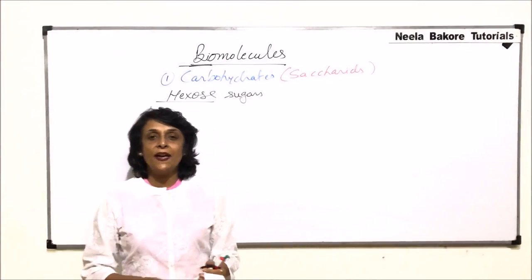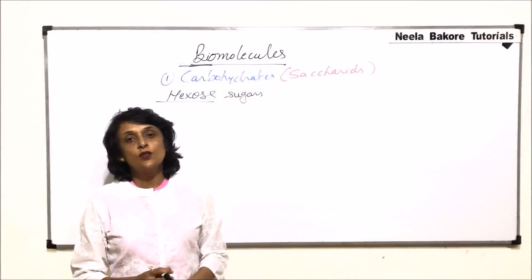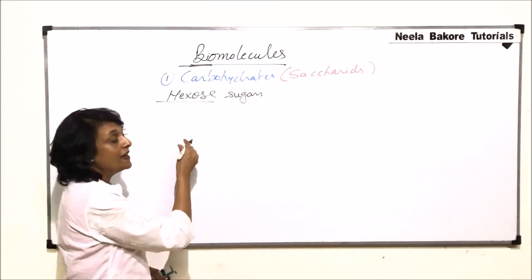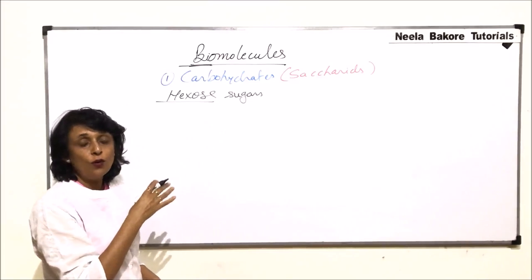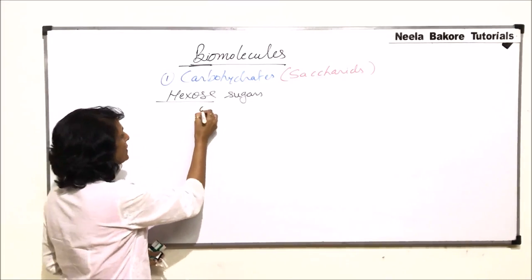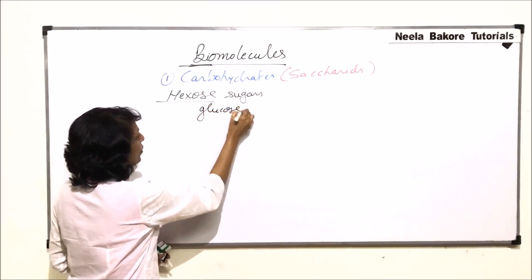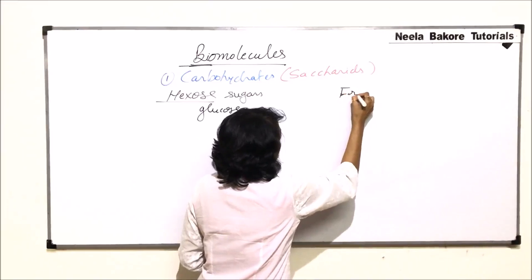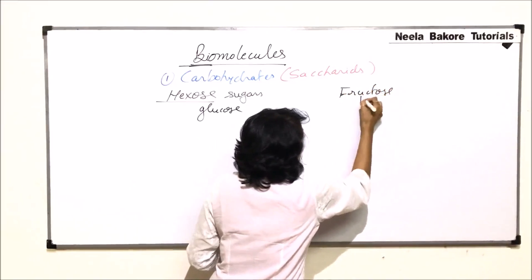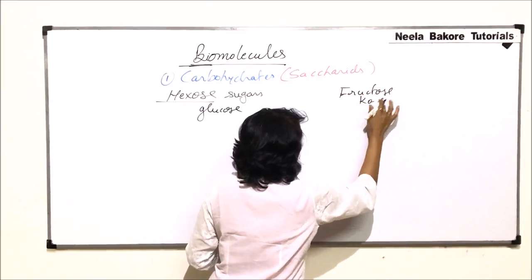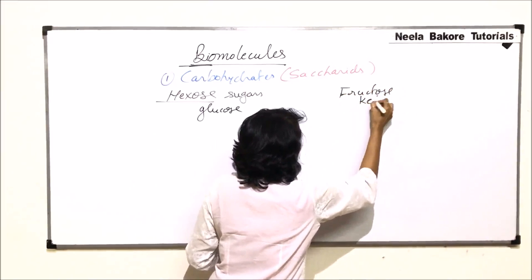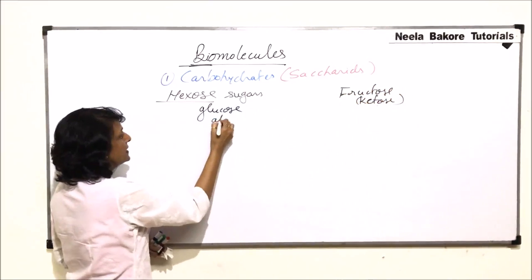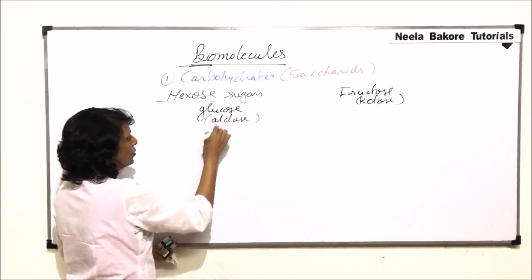In this part we'll compare the structure of glucose and fructose — both are hexose sugars. We have seen the structure of glucose before, but we will quickly go over it again. Glucose is an aldose sugar and fructose is a ketose sugar.